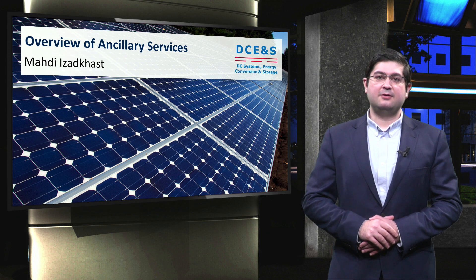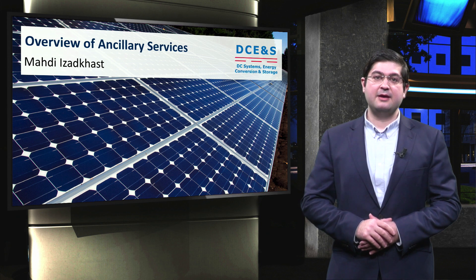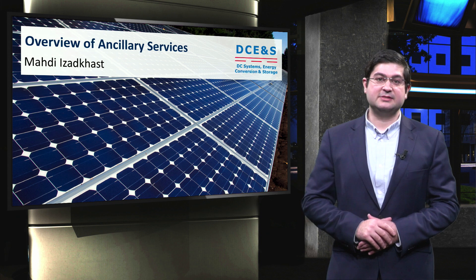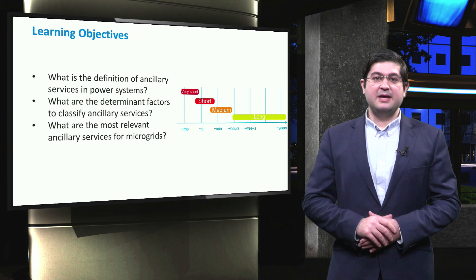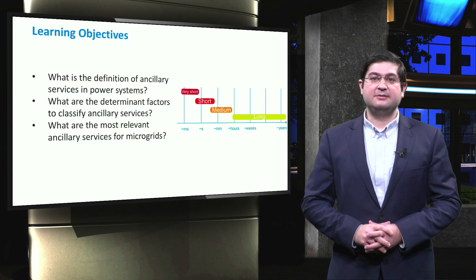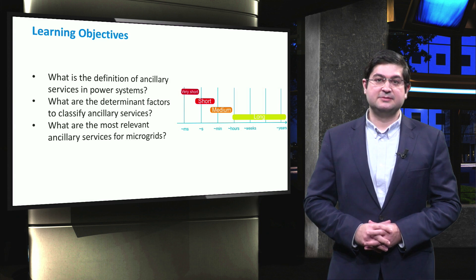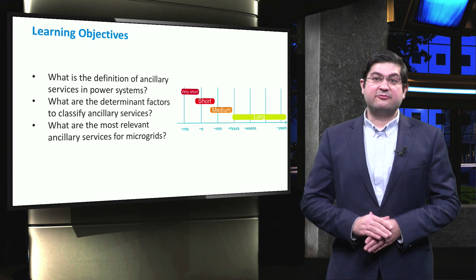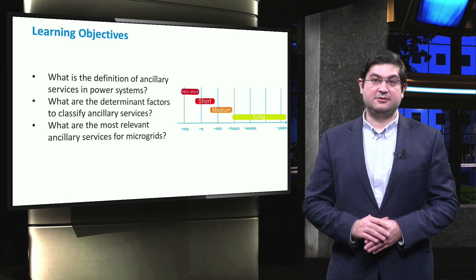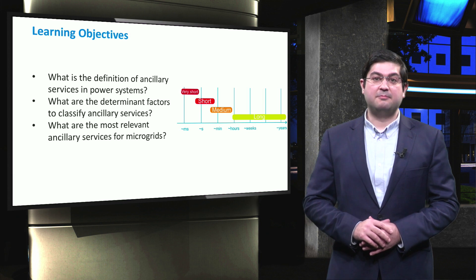In this video we provide an overview of crucial electricity services which can be provided by various electrical components in electrical power grids. In power system research they are called ancillary services. The main learning objectives will fall under three main questions: what is the definition of ancillary services in electric power systems? What are the determinant factors to classify ancillary services? And what are the most relevant ancillary services for microgrids?